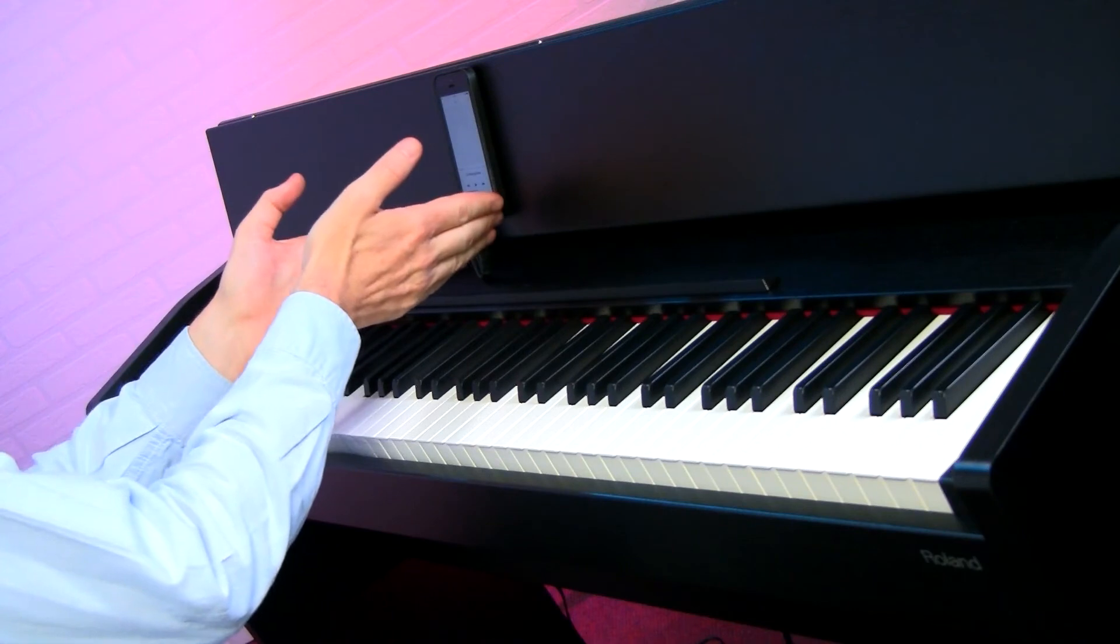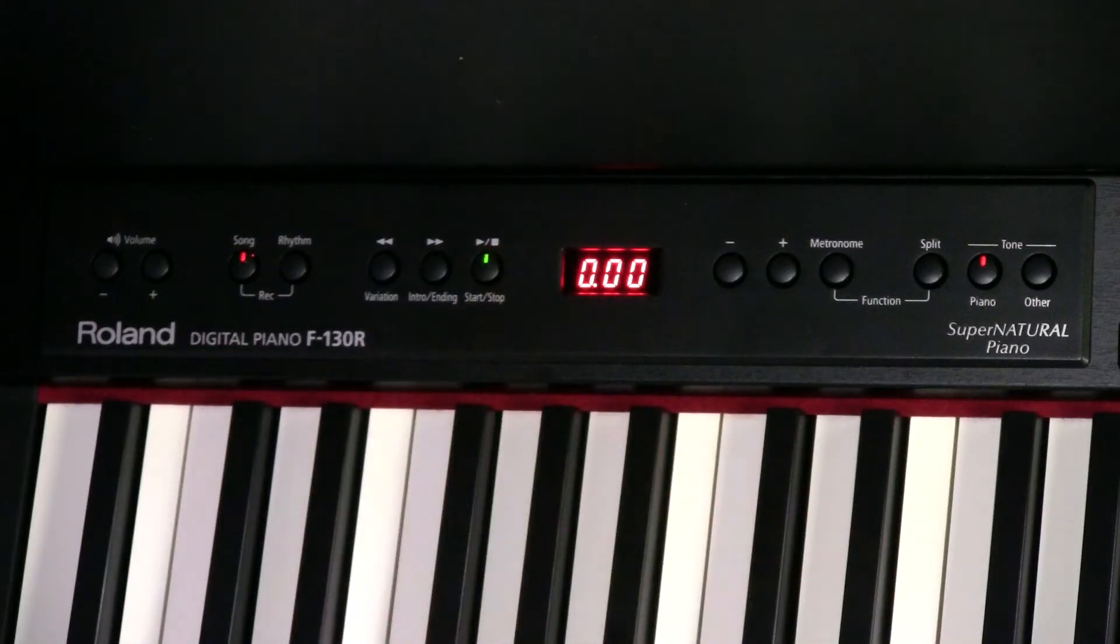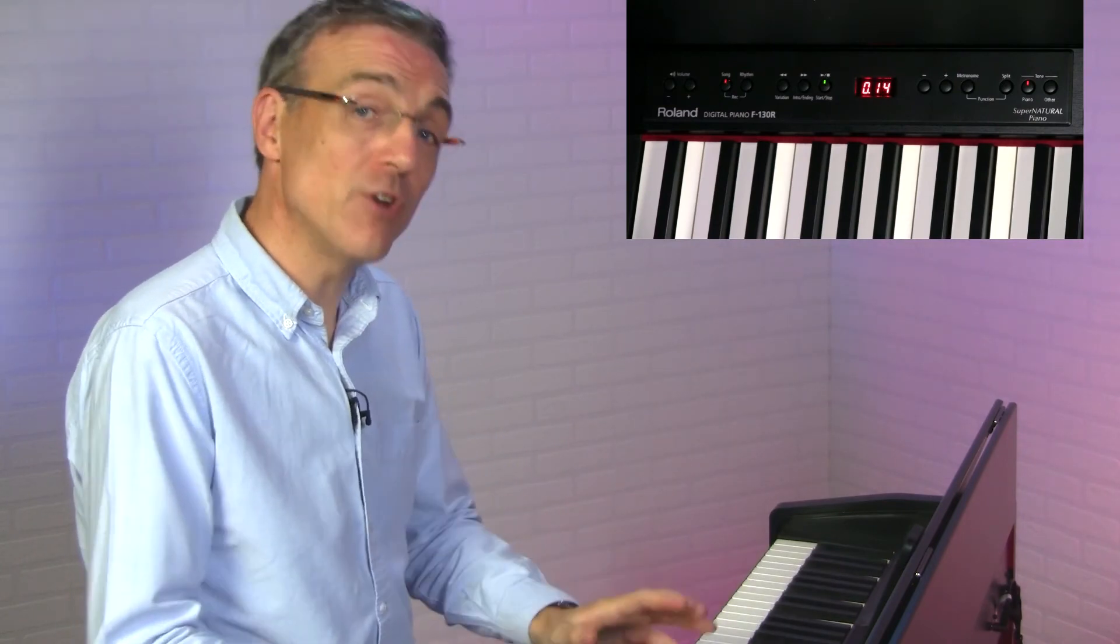On some digital pianos, you can also play back your favourite songs, either from a mobile phone, or from a USB key. So I'm going to play a song now from a USB key. Now what's really cool is you can also, on some digital pianos, use a feature called centre cancel, which will remove the vocal, or the tune, enabling you to play along over the top.